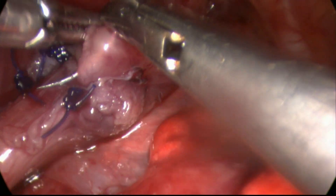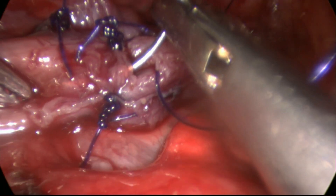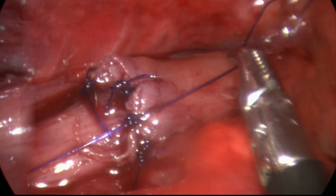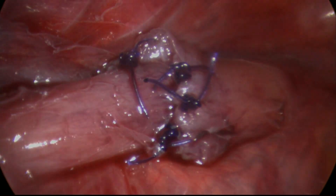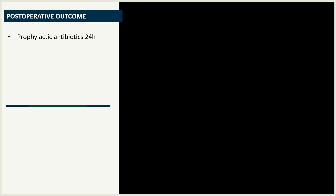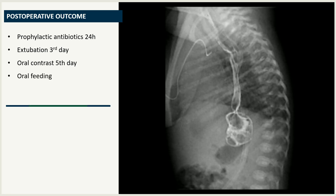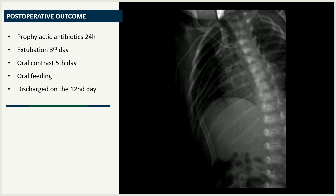Once the anastomosis is complete, the tube can either be removed or maintained. Some authors recommend maintaining it for early feeding, but this management is controversial. We opt to place a chest drain near the anastomosis under direct visualization through the lowest port. We kept the patient on prophylactic antibiotics for 24 hours and on ventilation until safe extubation on the third postoperative day. On the fifth postoperative day, an oral contrast study revealed a permeable anastomosis with no leakage. The chest drain was then removed and oral feeding was initiated.